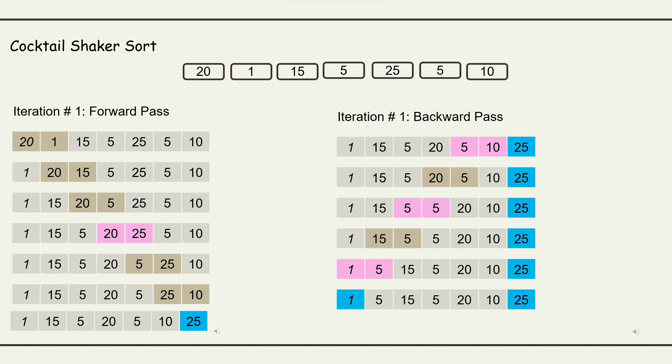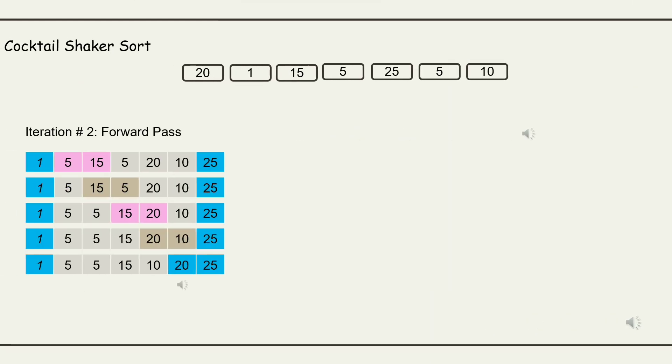Backward pass. 15 and 5. 15 is greater than 5, so they need to swap. 1 and 5. 1 is less than 5, so no swap.